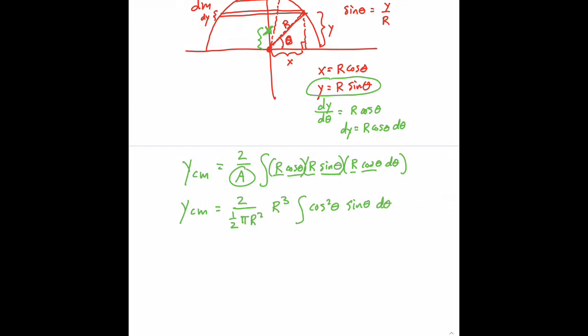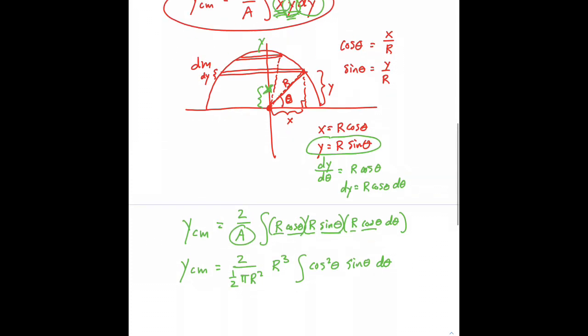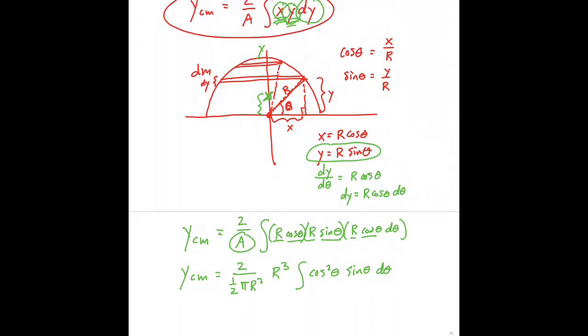And again, we got a little ahead of ourselves. We haven't thought of the limits of integration yet. So let's go back to our picture. And imagine what's the least value of theta and largest value of theta we have to account for. So the very first slice of our semicircle is located down at the bottom. And the angle in that case would be 0 degrees. And then the very last little slice is way up here at the top where theta is equal to 90 degrees. So we're integrating from 0 to 90 degrees.